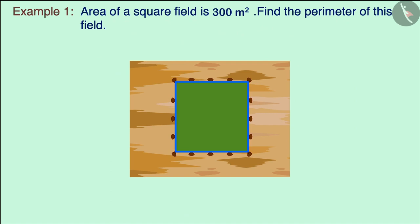Look at this square field. The area of this field is 300 square meters. Find the perimeter of this field.